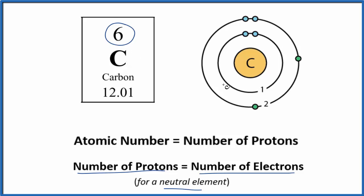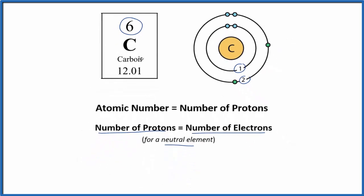And we're going to distribute those in energy levels. Carbon has two energy levels. Let's look at the periodic table to help us understand how these electrons are distributed in the energy levels here of the carbon atom.